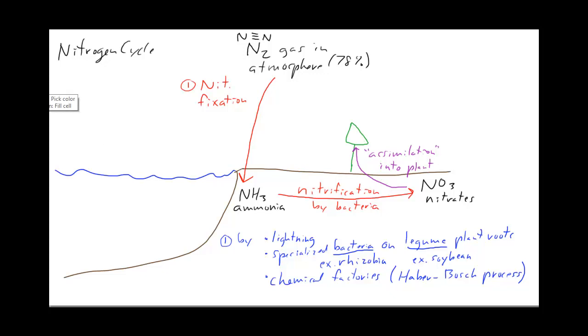When that plant decomposes, the nitrate is turned back into ammonia. So this would be our decomposition. And remember that consumers are also eating this. As the giraffe is eating the plants, when it dies, it's also going to undergo decomposition. And the nitrates in its body will go back into ammonia.